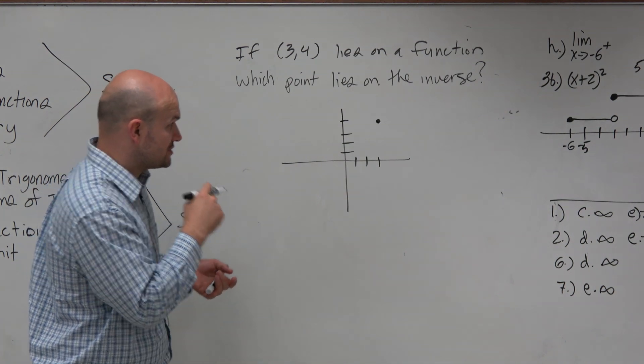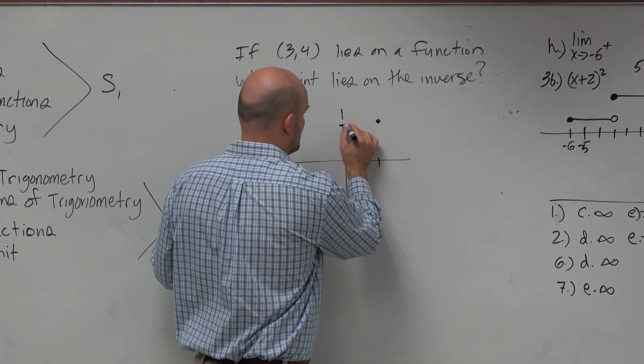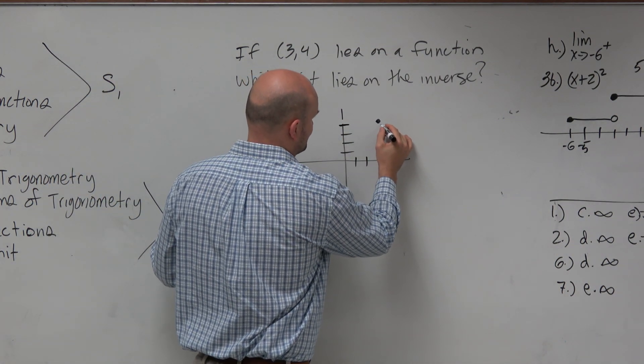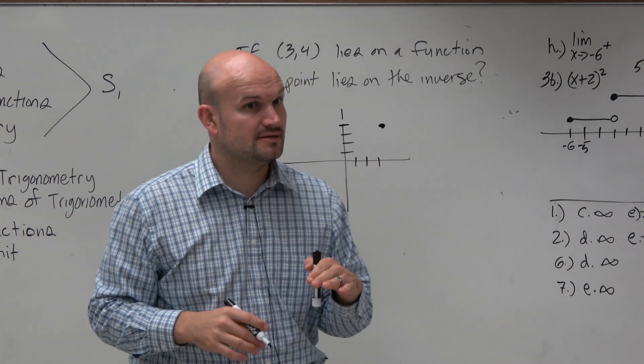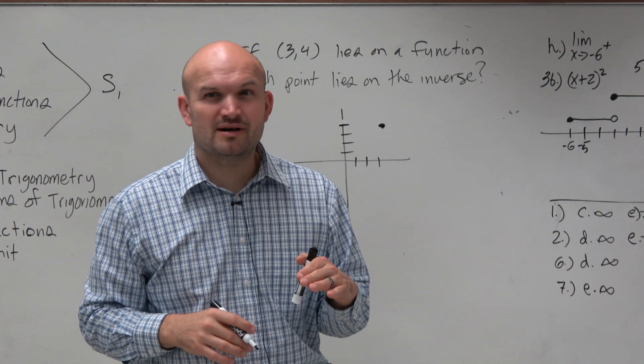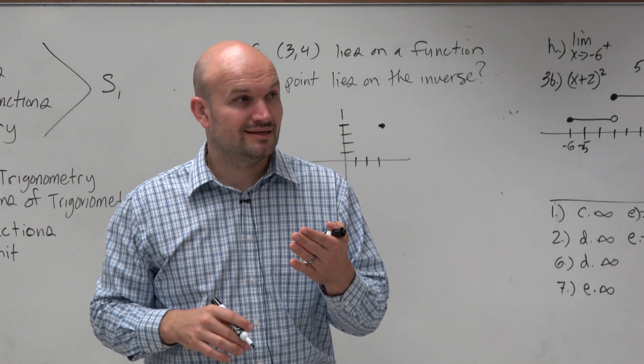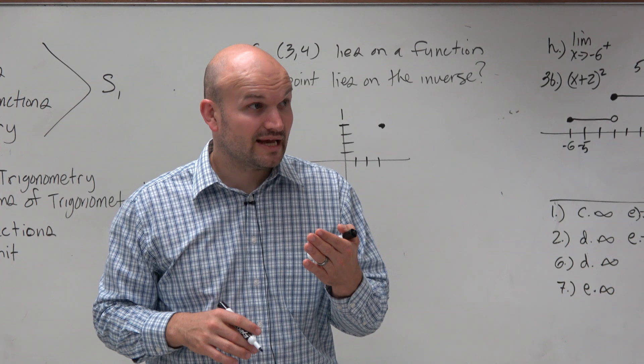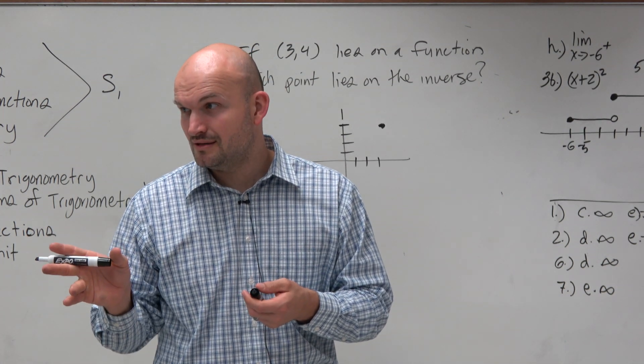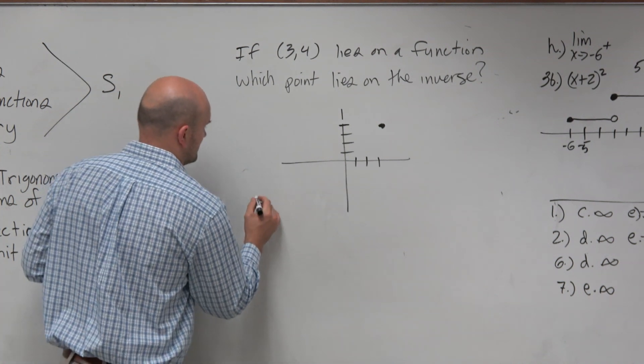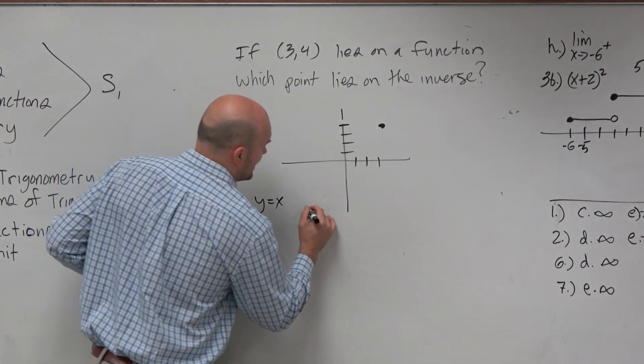But it says it's an invertible function. And if it's an invertible function, that means we know something about it. Do you guys remember what we know about an invertible function, at least the graph? It has symmetry. A function and its inverse has symmetry. Does anybody remember what it's symmetrical about? y equals x. That was the line of symmetry.